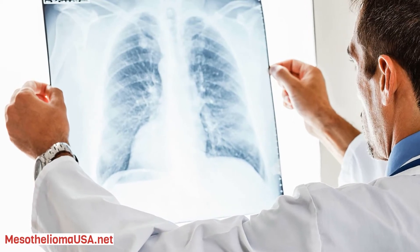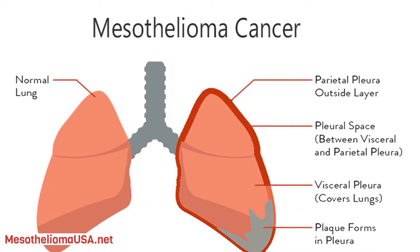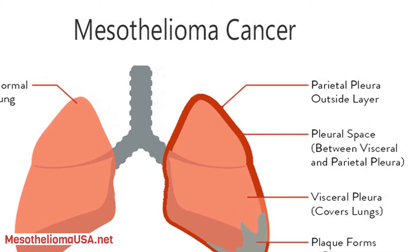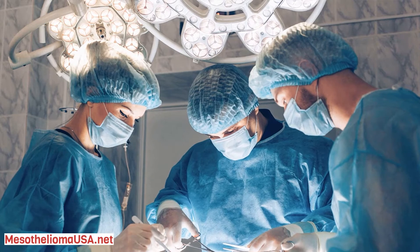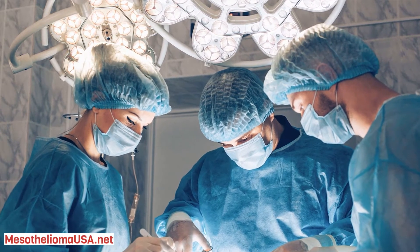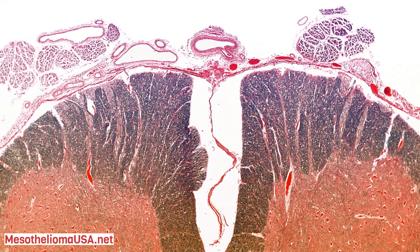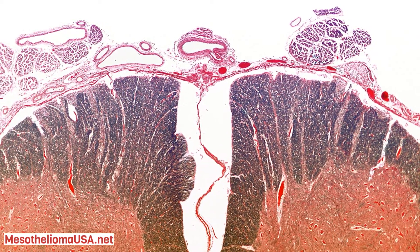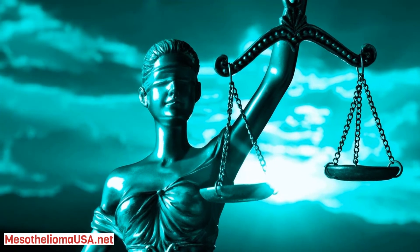Surgical biopsies used to diagnose mesothelioma include a thoracotomy and a laparotomy. In a thoracotomy, doctors create a large incision in the chest cavity, allowing the physician to directly view tissues and gather biopsy samples; this procedure is done under general anaesthesia. In a laparotomy, doctors create a large incision in the abdomen, allowing the physician to directly view tissues and gather biopsy samples; this procedure is also done under general anaesthesia.